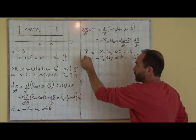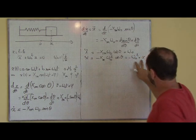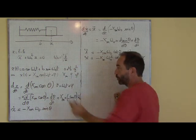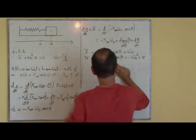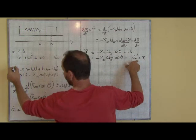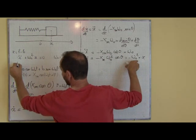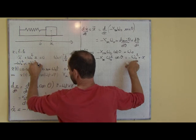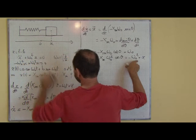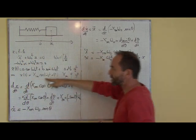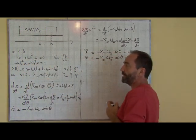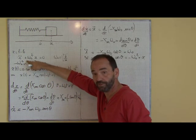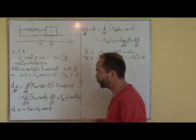En remplaçant dans l'équation, on vérifie que x(t) est la solution : ẍ + ω₀²x = −ω₀²x + ω₀²x = 0. Donc cette expression est bien solution de cette équation différentielle du second ordre.